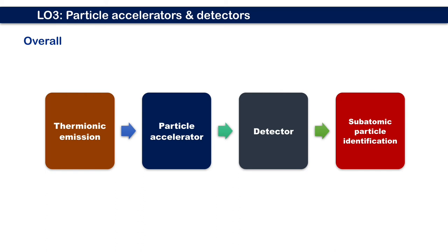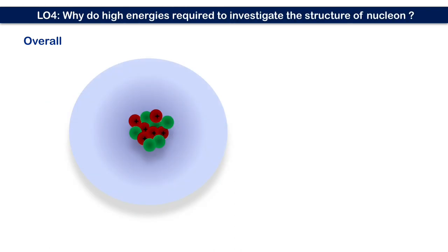So far, we have learned that the production of particles, specifically electrons, started with thermionic emission. Then it was accelerated through a particle accelerator to gain energy in order to smash the target. As a result, the detector will observe the event in the form of tracks. This is followed by the identification of the subatomic particles based on the collisions.